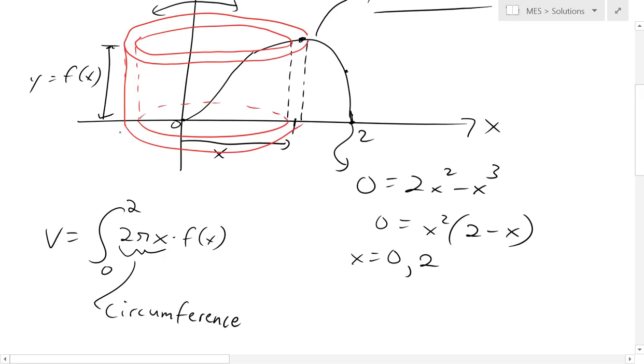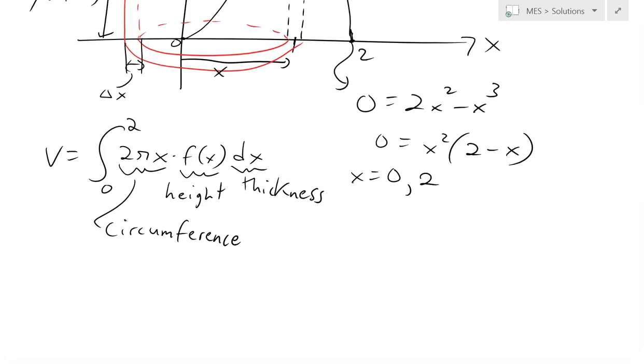And then this is going to be our delta x right here. But in the integral, it's going to be our dx. So this is the height. And this, obviously, is considered our infinitely small thickness. And that's the cylindrical shells method. If you haven't seen this already, make sure to watch my earlier video.